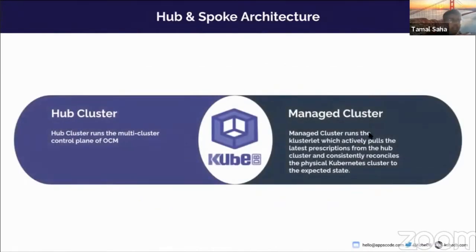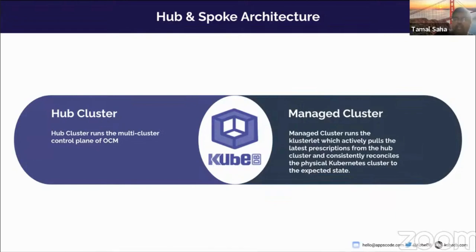The architecture OCM follows is a hub and spoke model — like a bicycle wheel with a central hub and spokes pointing to the edge. You have one central cluster acting as the control plane for all the other managed clusters. Each spoke or managed cluster connects to the hub cluster, and once connected, human admins can manage everything through the hub without doing anything directly on the managed clusters.